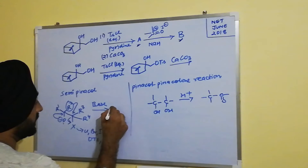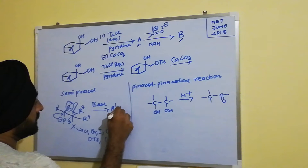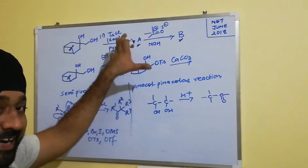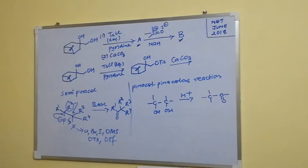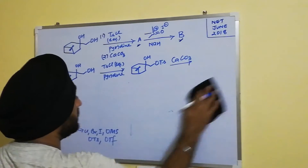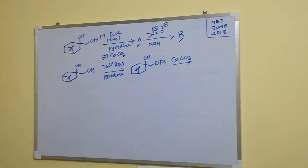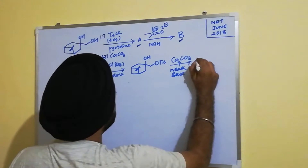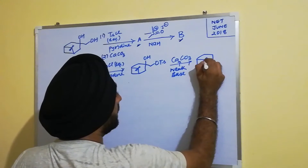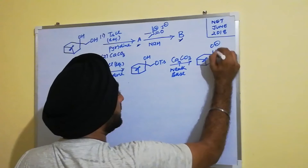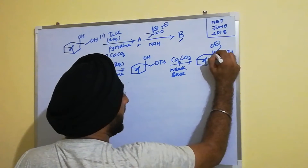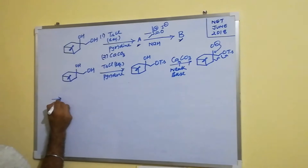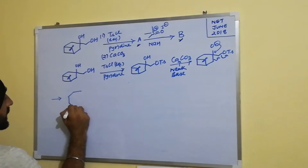Since we have a leaving group that departs, this leads to the formation of a ketone. In this particular case, calcium carbonate — being a weak base — leads to the formation of the anion. Once the anion is formed, the ring expands and since we have a leaving group like tosylate, it leaves.